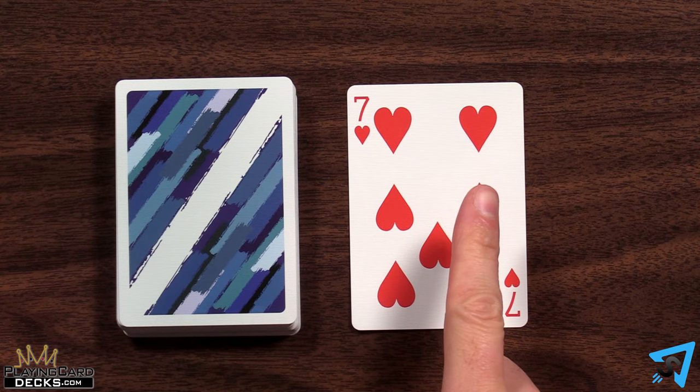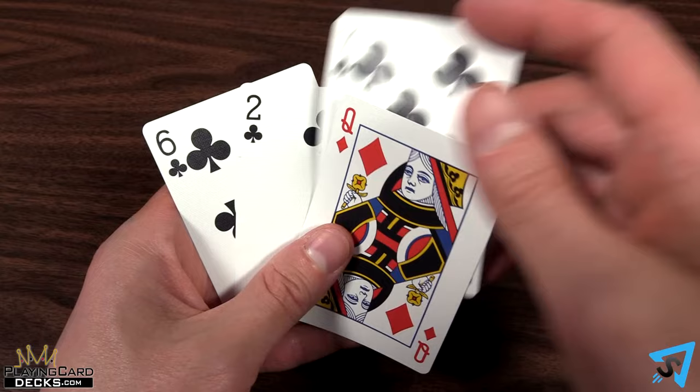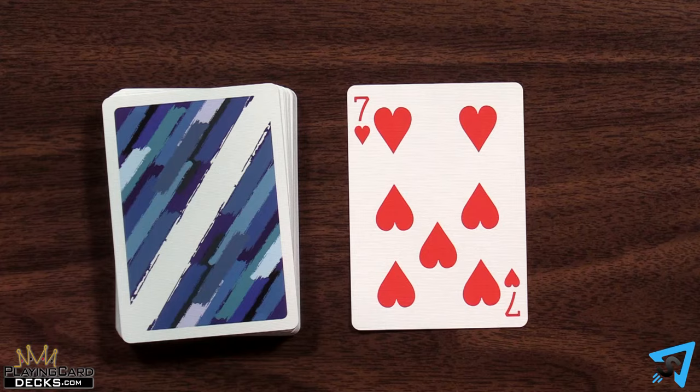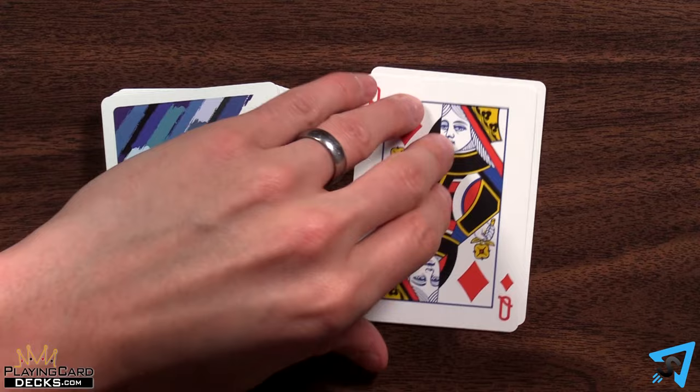The player left of the dealer goes first, then play proceeds clockwise. On your turn, draw one card from the top of the stock or discard pile and add it to your hand. Then, discard any card from your hand to the discard pile. Then, the next player clockwise goes.